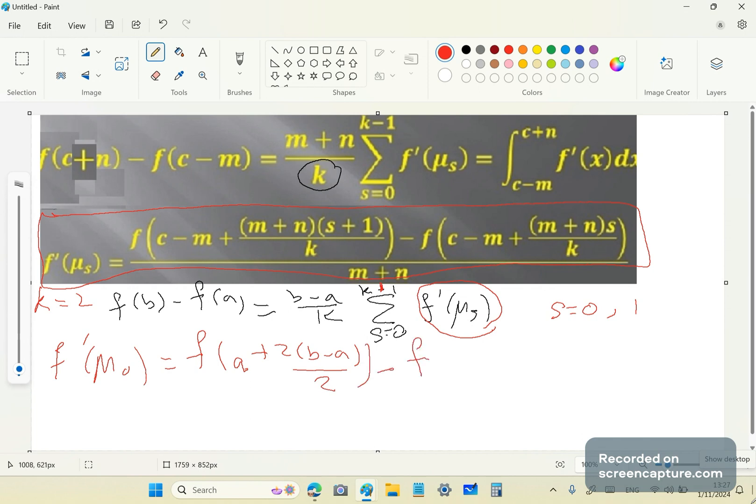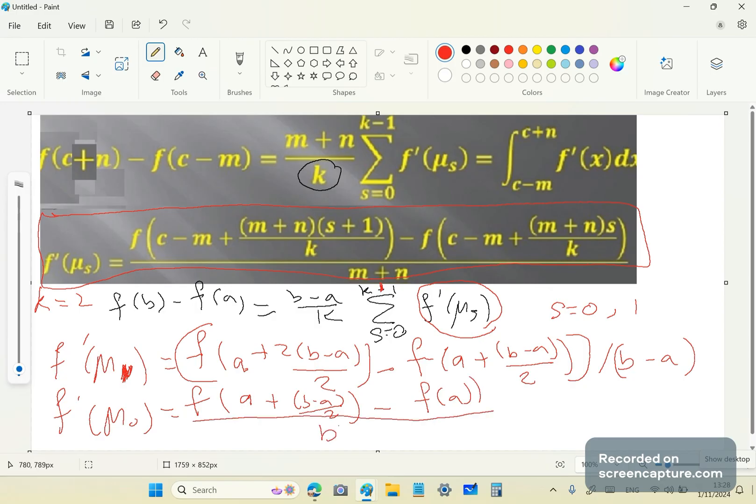So F prime mu 0 is equal to F of A plus 2 B minus A over 2 minus F. I'm sorry, I've actually calculated mu 1. That's okay. Let's do mu 1 and then we'll go back and do mu 0. So that's mu 1 and that's all over B minus A. And F prime mu 0 is going to be F of A plus B minus A over 2 minus F of A, all over B minus A.